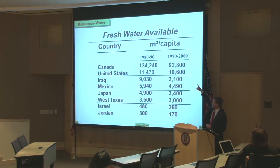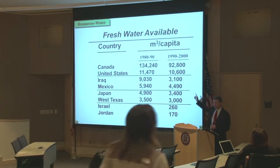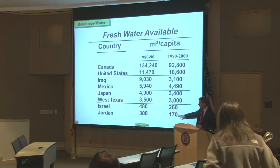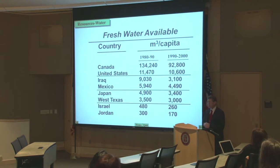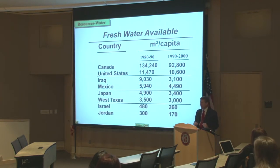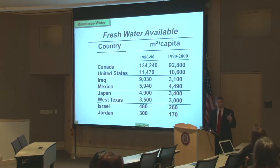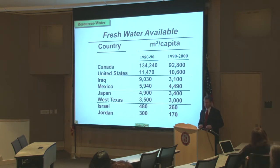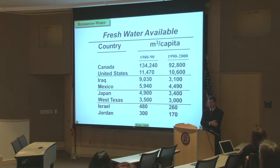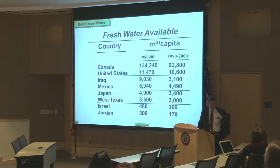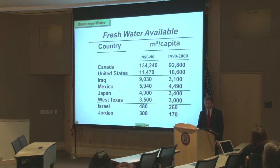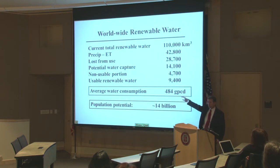Think about how much water you consume every day on average — several hundred gallons if you water your lawn. But think about the fact that there's water consumed to make your clothes, water consumed to build your computers. When you take all those things into account, it turns out to be almost 500 gallons per day per person for all the different things we do in our lives. This is a worldwide number.